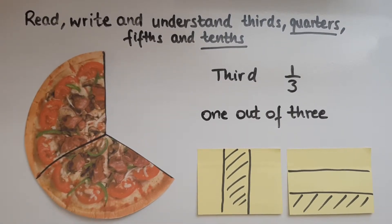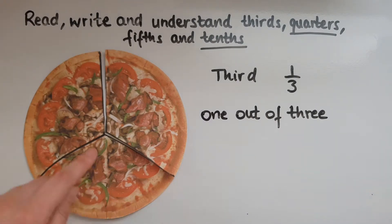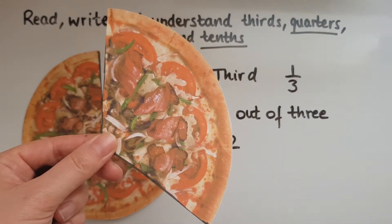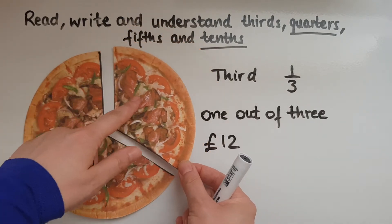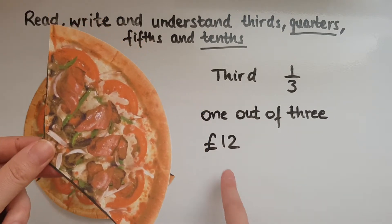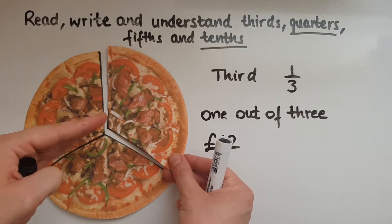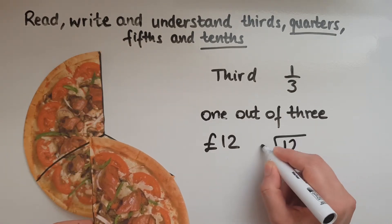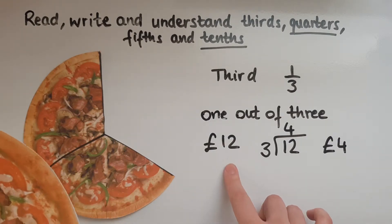How do we work out one third of an amount? Let's suppose the whole pizza costs £12. I want to find out what is one third of the cost — how much would that one slice be worth? How many people would share this and have equal pieces? That would be three people, so we're sharing the cost equally between three. So I will divide 12 by three. How many threes fit into 12? That is four. So one third of £12 is £4.